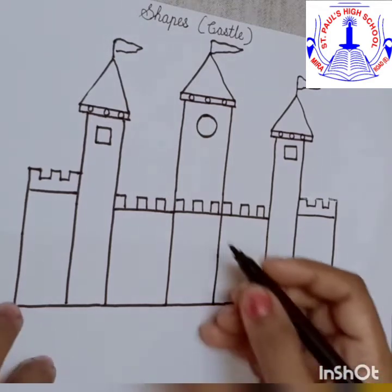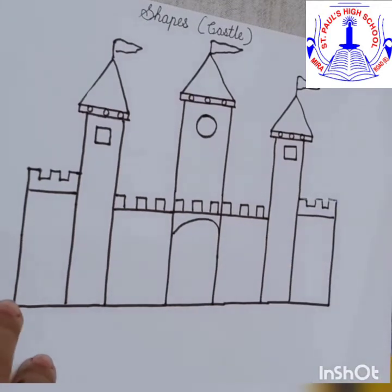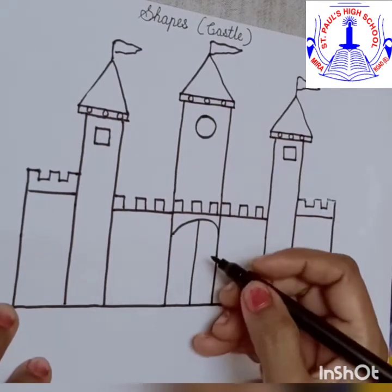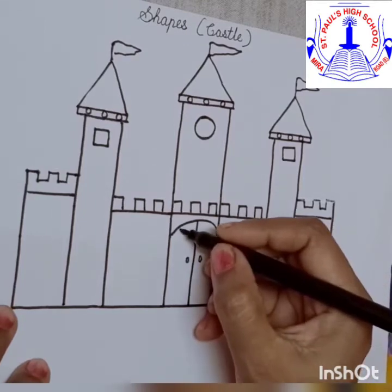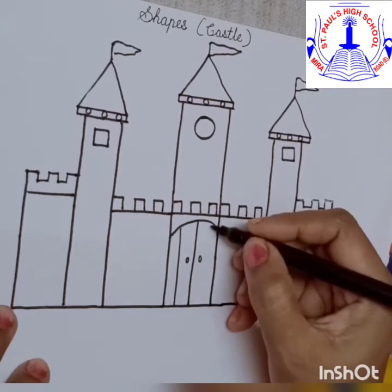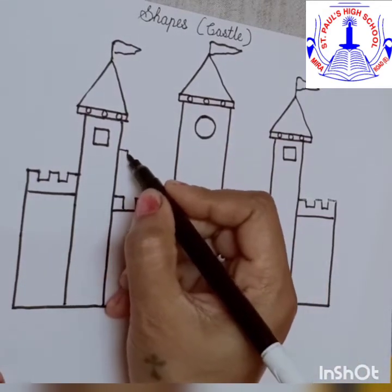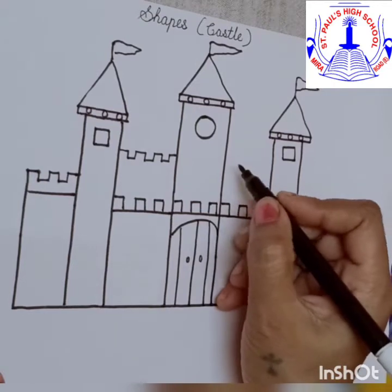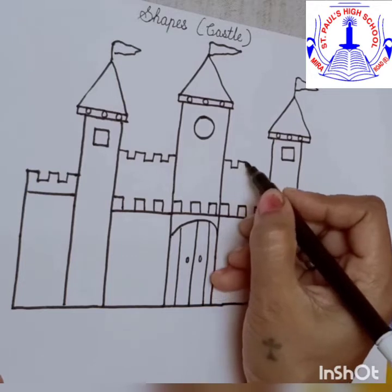In the olden times, the king used to live in a big castle. Castle is a big building made with stones and bricks. It had a big wooden door. Again we are going to give some design in the centre — just make a sleeping line, standing line, sloping line, standing line.